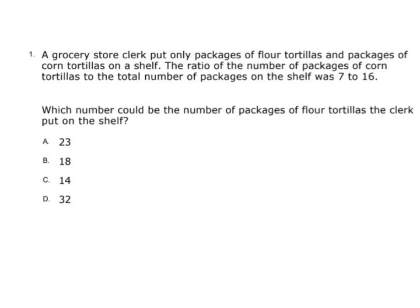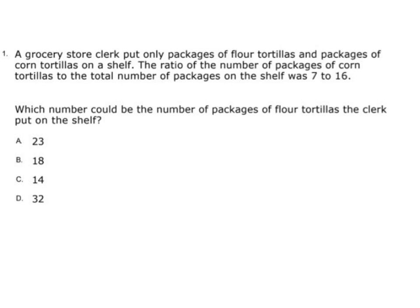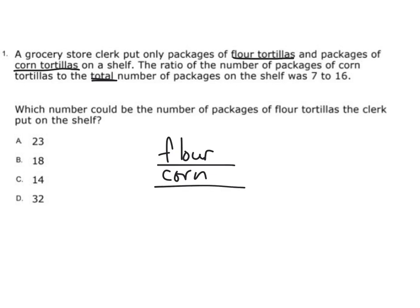I'm going to go ahead and underline what I do know: flour tortillas, corn tortillas, and then we also have total. So I'm going to put flour, corn, and total. So if I have 7 flour tortillas and the total is 16 — actually it's corn tortillas, not flour. So I'm going to go ahead and erase that, because I made a mistake, and that's a common mistake some of us do.